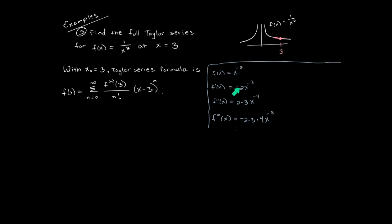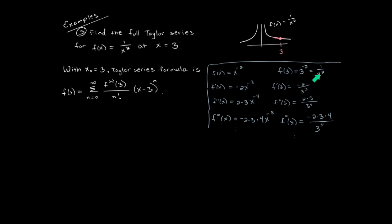We can start to see the pattern. In the numerators we have 4 factorial, 3 factorial, 2 factorial. When we plug in x equals 3 in the denominators, we get 3 squared, 3 cubed, 3 to the 4th — a clear pattern for the coefficients. Also notice that the signs alternate between plus, minus, plus, minus.